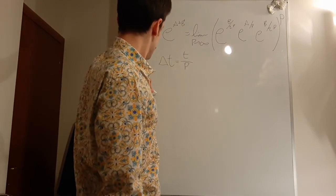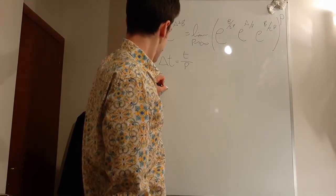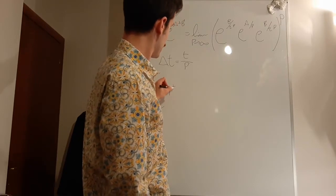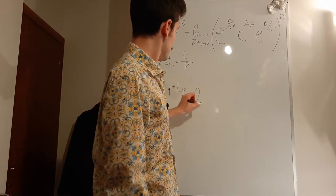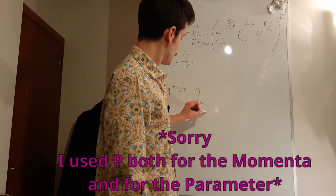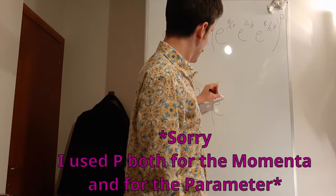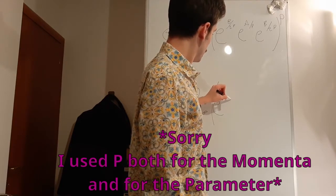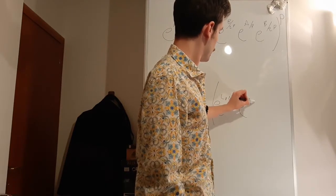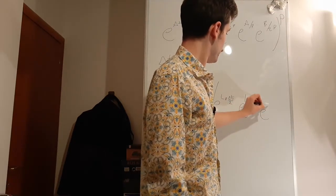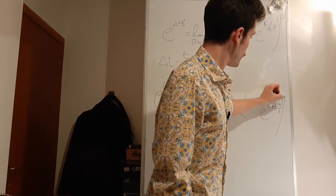We could rewrite it as e to the L in the positions, L in the momenta as the limit for P that goes to infinity of e to the L_P delta t over 2, L_Q delta t, e to the L_P delta t over 2, all at the power of P.